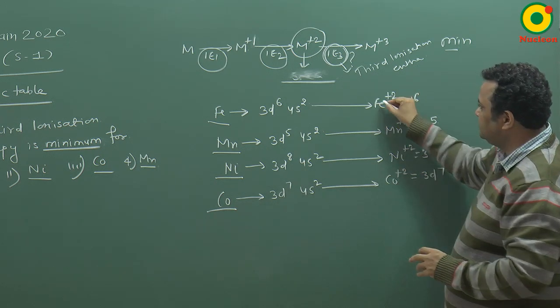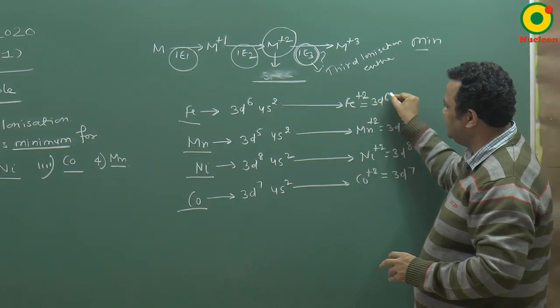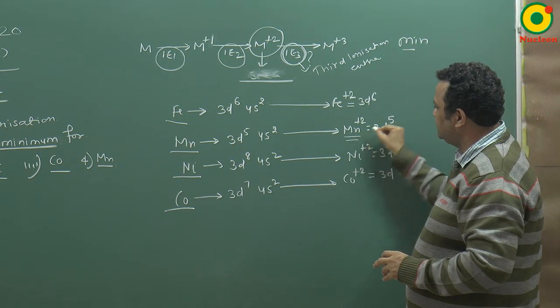If two electrons are removed, then iron plus 2 is 3d6, Mn plus 2 is 3d5,